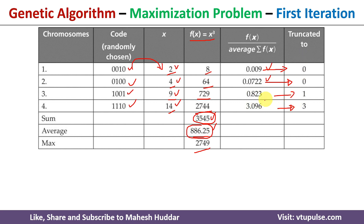Once you round off these values, two values are set to 0, meaning we will not consider those two chromosomes for the next iteration. We will consider only the two chromosomes with non-zero values. In genetic algorithm, once you select these two chromosomes, we need to apply the crossover operator.